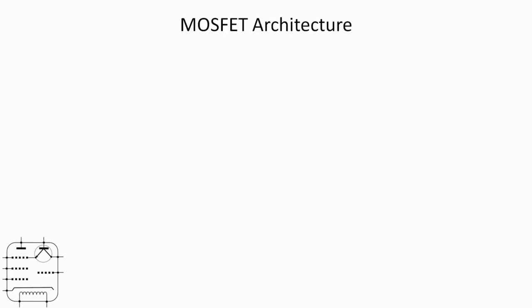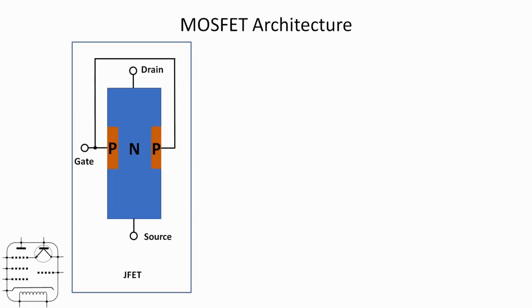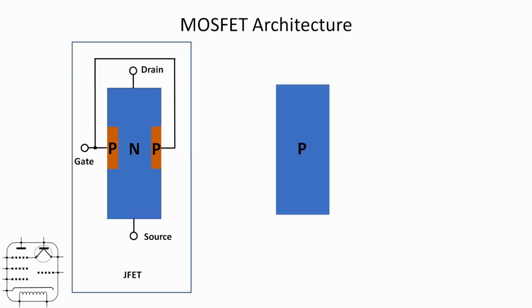Looking at the architecture — just a little bit of revision. You may recall from the previous video the structure of a junction field effect transistor, where there are two pieces of P-type material set into the N-type substrate, and the two gate connections are connected to the P-type material — that's the JFET. A MOSFET is a little bit different: we've still got the substrate, however this time it's P-type, and this is for an N-channel MOSFET. Inlaid into that are two N-channels.